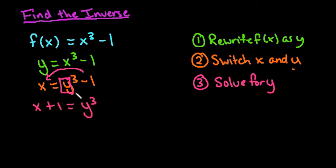And then we want to get y completely by itself. Right now since it's cubing, the opposite of cubing is the cube root, so we would take the cube root of both sides. And so if we simplify this, we get the cube root of x plus one is y.